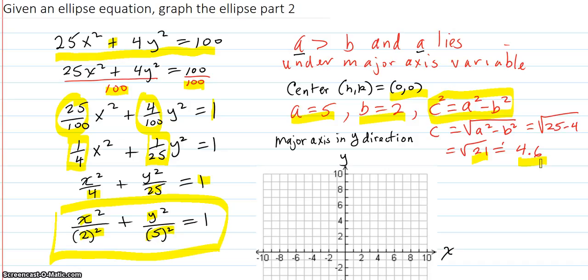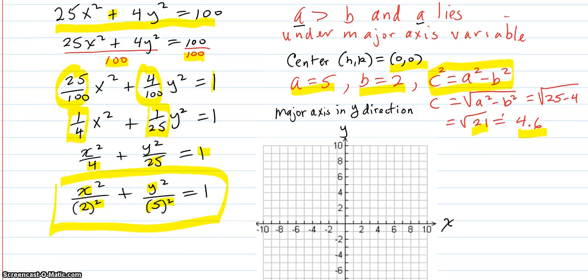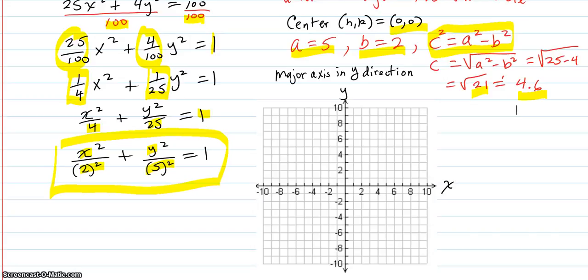Now let's just graph everything we have on here and try to graph this ellipse. So we put the center, hk center, right there, 0, 0. The major axis is in the y direction, because the a always lies under the major axis direction. And the a was there, and that's lined up under the y. So it's long in the y direction.